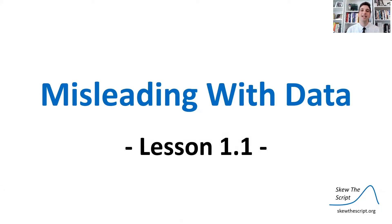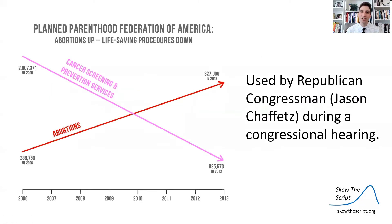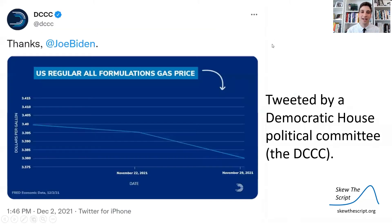Today's lesson is on misleading with data. This is lesson 1.1 in our course sequence. We're going to look at a couple of really key graphs today. The first was used by Republican congressmen during a congressional hearing on Planned Parenthood. The second is on gas prices and was tweeted by the DCCC, which is a political committee for House Democrats.